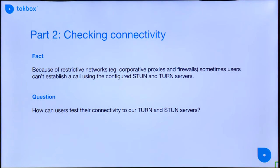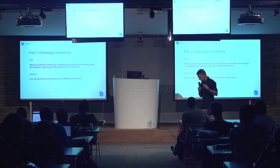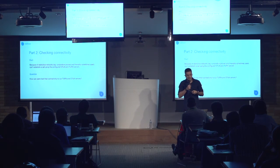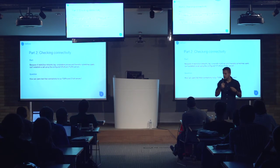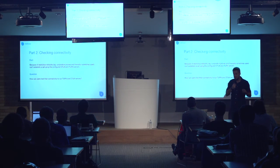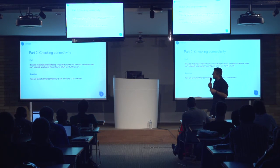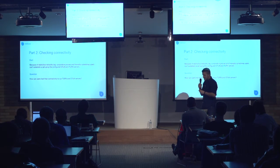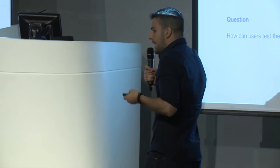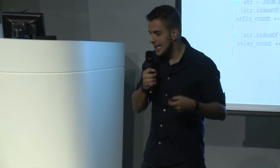The second part is checking the connectivity to our ICE servers. Because of restrictive networks such as corporate firewalls, sometimes users cannot establish a call using our ICE servers — our STUN and TURN servers. So the question is: how can users test the connectivity to our TURN and STUN servers before they join the conference? I have a sample that explains how to do this.